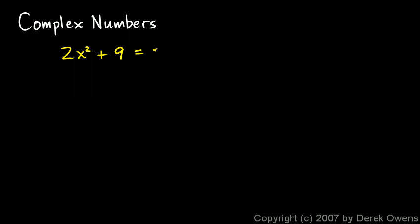Take a look at this problem: 2x squared plus 9 equals 5. This is an ordinary Algebra problem, so let's tackle it using the basic techniques of Algebra — we can do anything we want to the equation as long as we do the same thing to each side. My goal is to solve for x, so I need to subtract 9 from each side. The plus 9 and negative 9 cancel out, leaving 2x squared on the left and 5 minus 9, which is negative 4, on the right.